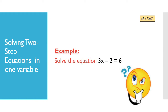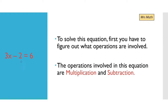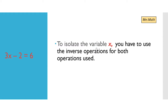Now we are going to learn how to solve two-step equations in one variable. Here is an example: we need to solve the equation 3x minus 2 equals 6. To solve this equation, we first have to figure out what operations are involved. x is the variable. We have minus 2 and we have 3 multiplied, so the operations involved are multiplication and subtraction. To isolate x, you have to use the inverse operations — the inverse of subtraction is addition and the inverse of multiplication is division.